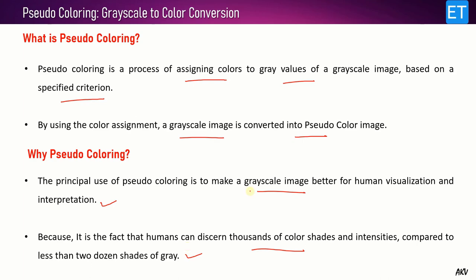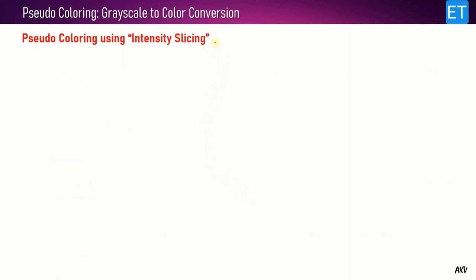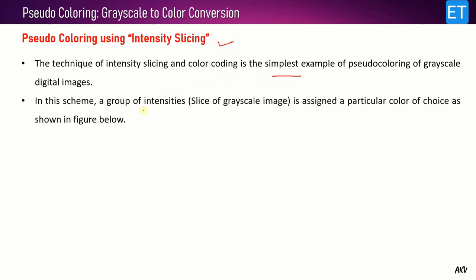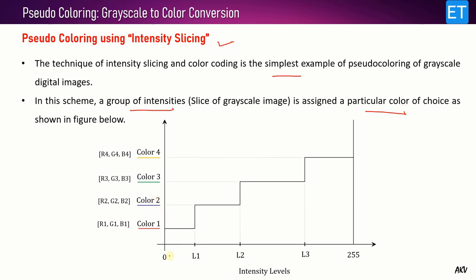The first method is intensity slicing, which is the simplest method to assign colors to grayscale images. In this scheme, a group of intensities from the input grayscale image is assigned a particular color of our choice. This is shown in a figure where the x-axis has all gray values from 0 to 255 for an 8-bit grayscale image with 256 intensity levels, and the y-axis has the different colors to be assigned. The input intensities are divided into a few slices.